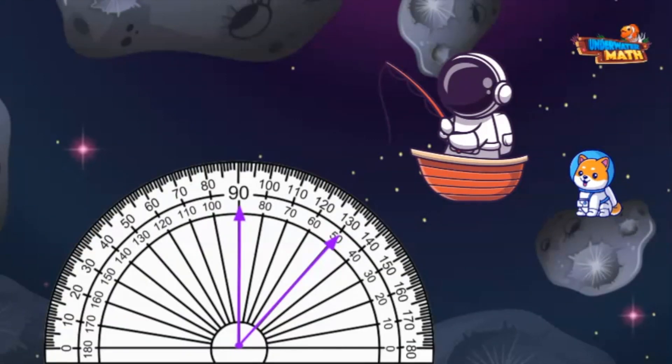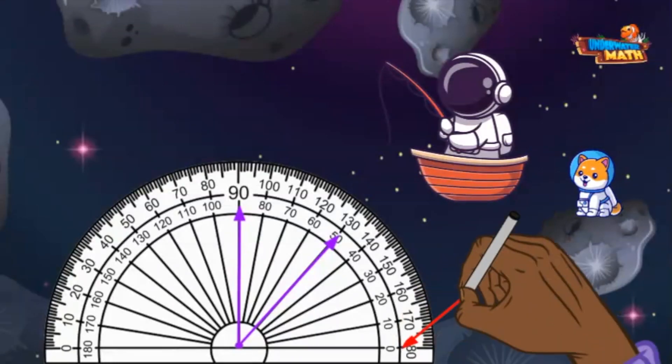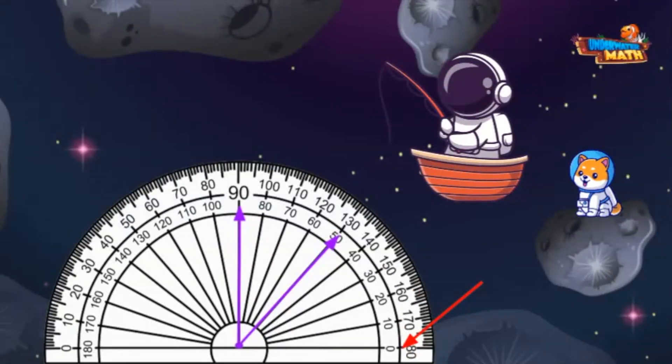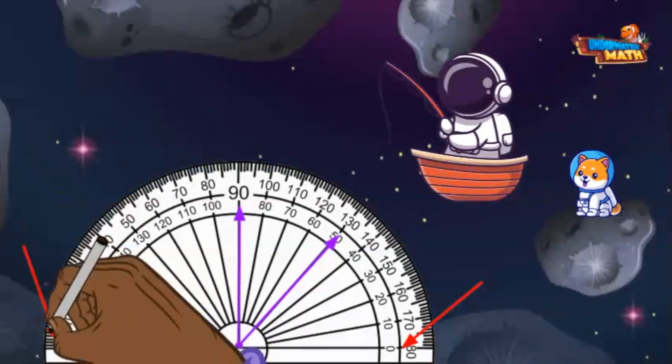If you notice, the protractor counts by increments of 10 degrees. It starts at zero and works its way up by tens all the way over to 180 degrees. The same thing happens for the top numbers of the protractor.